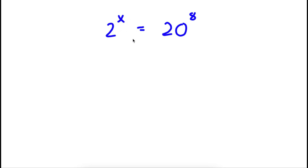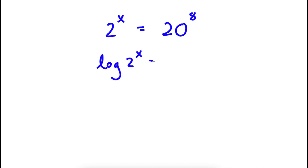So I have 2 to the power of x is equal to 20 to the power of 8. The first thing I'm going to do is take the log on both sides. So now I have log 2 to the power of x is equal to log 20 to the power of 8.